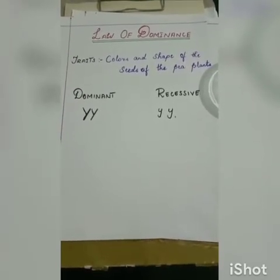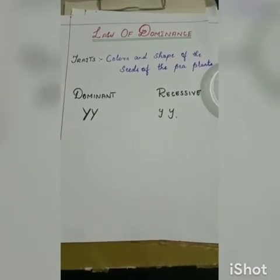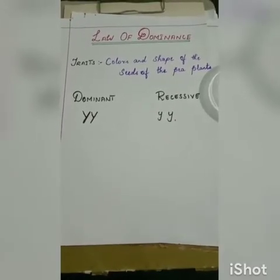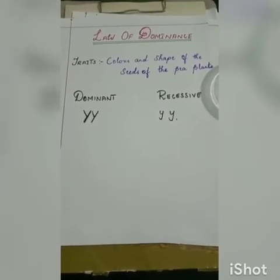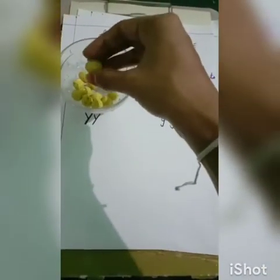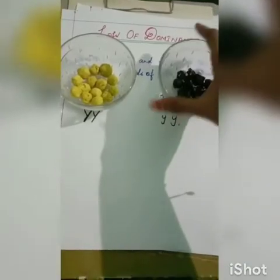For that, I have taken the traits as colors and shape of the seeds of the pea plant. For this experiment, I have made paper balls and assumed them as the seeds of the pea plant. I have taken the dominant character as the yellow color balls which are round in shape, and the recessive character as green color balls which are wrinkled in shape.